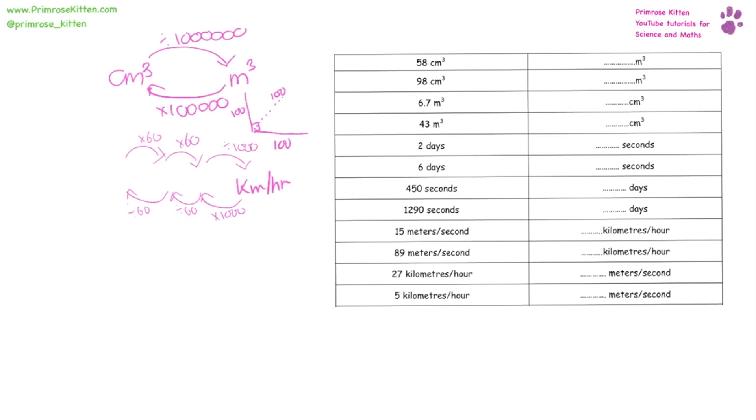If we are looking to do days into seconds, we need to think about it in the same way, so we need to go hours, minutes. So to go from days into hours, that's times by 24, into minutes times by 60, into seconds times by 60. And then we need to go in reverse to go backwards. So divide by 60, divide by 60, divide by 24.